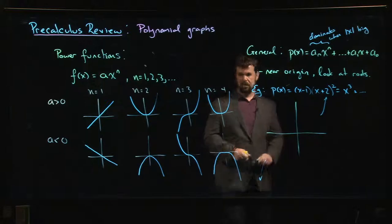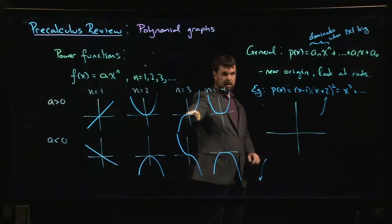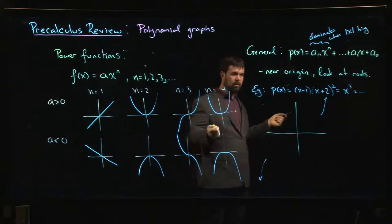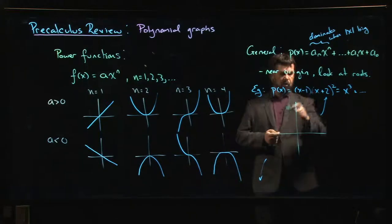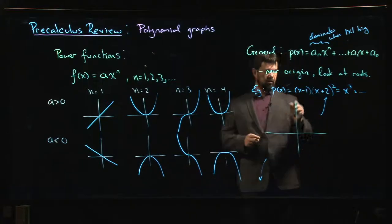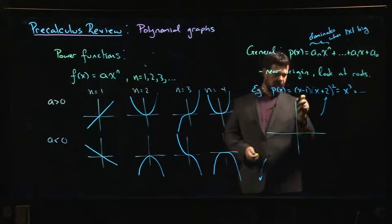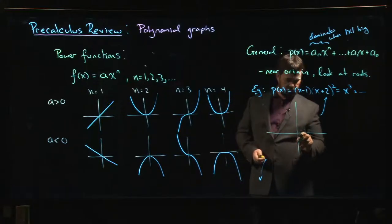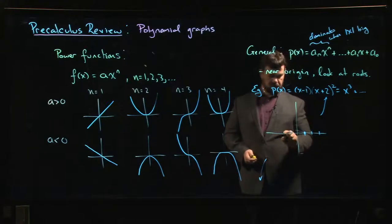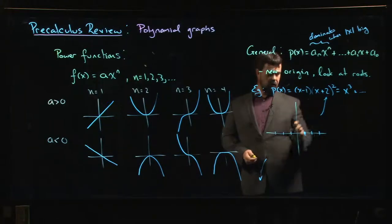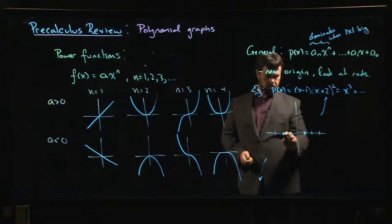Plus some other stuff. So we know that eventually it's got to be doing something like that. It's got to look like n equals 3 because it's cubic. But you might have some other stuff going on in between, so that's where you look at the zeros. So this thing touches the x-axis twice. It touches it once when x is equal to one.